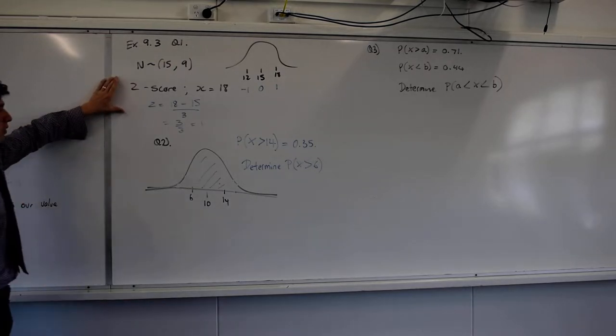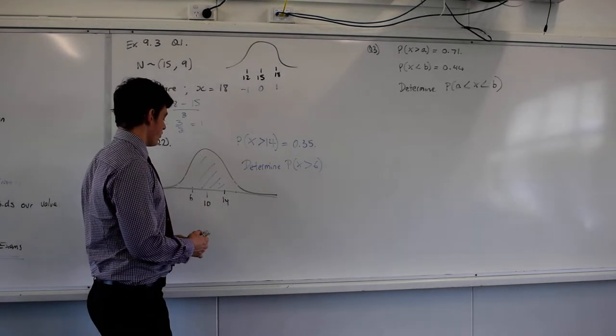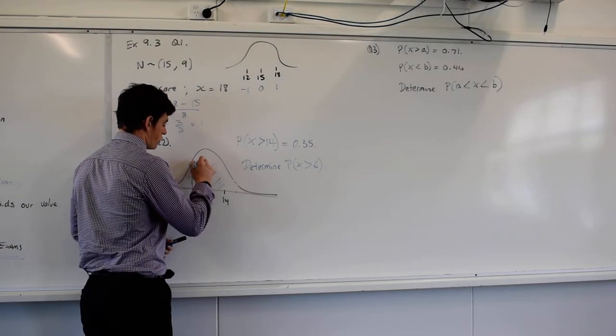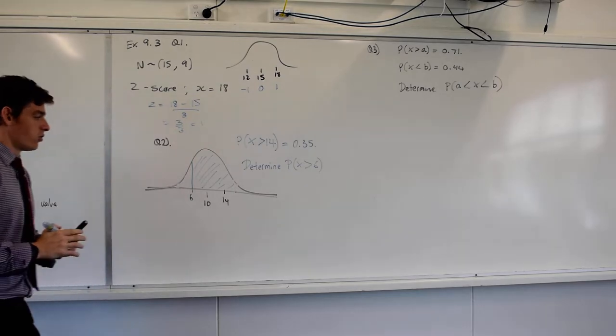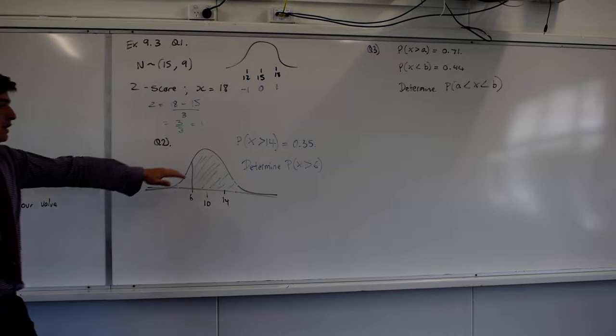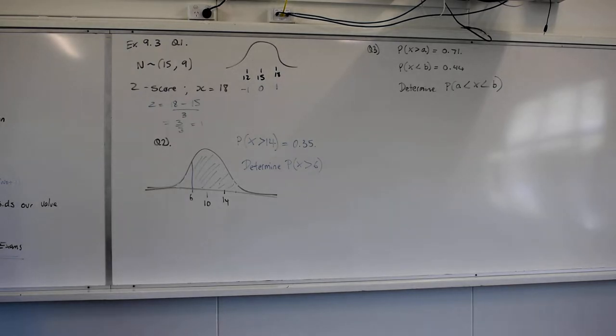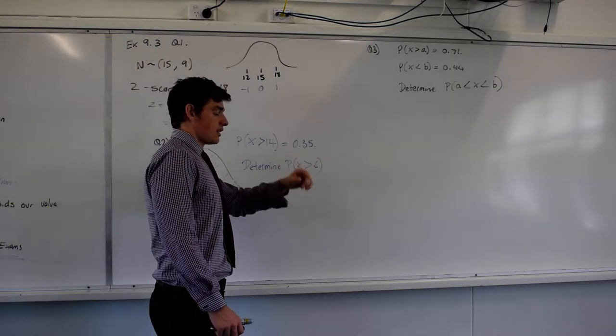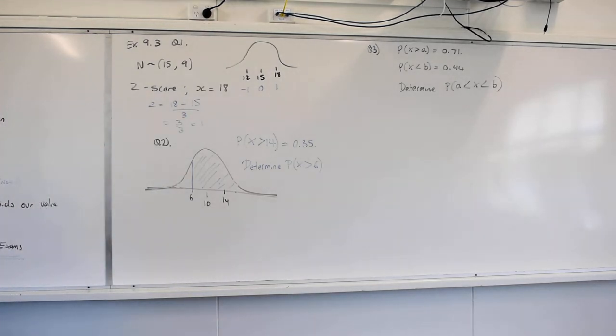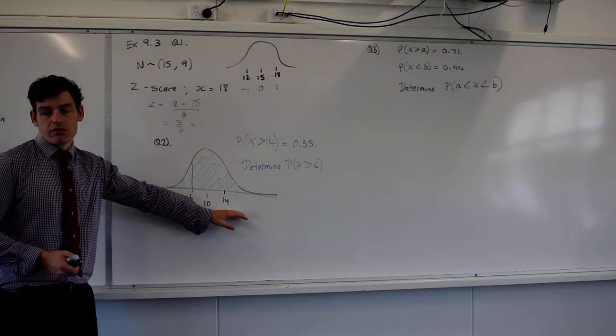That's a really nice, easy question. We're going to practice a few of those, but that's a good chance for us to practice calculating a Z score. Question 2 is a little bit tricky, because it's asking us now to use our understanding more of normal distributions than standard normal distributions. And it gives us this information, it says, P of x is greater than 14 equals 0.35. Find the probability that x is greater than 6. What's required for this to be done? Could you do this without the graph, or not?